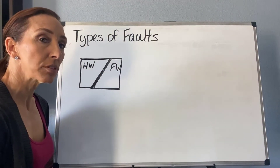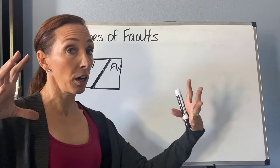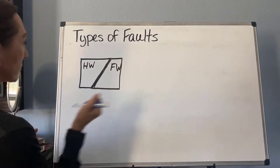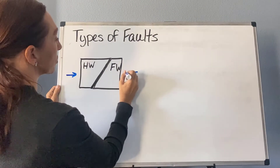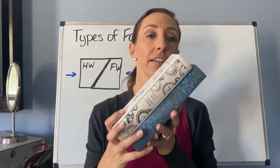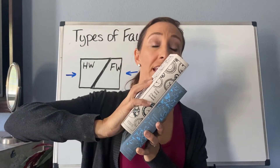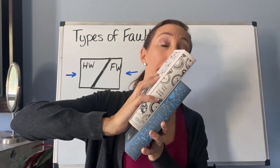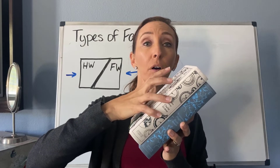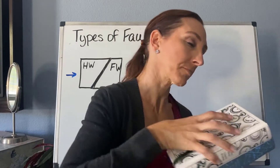Now, to look at our types of faults, what matters is whether we are pulling everything apart with tensional stress or pushing everything together with compressional stress. In the first example, let's push everything together with compressional stress. Using the books, if I push them together, you'll see the hanging wall rides up above the foot wall. If I were to pull them apart, the hanging wall would slide down on the foot wall.